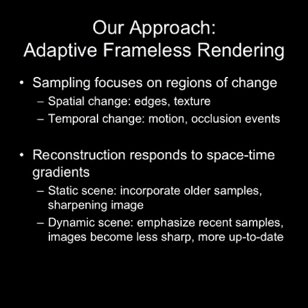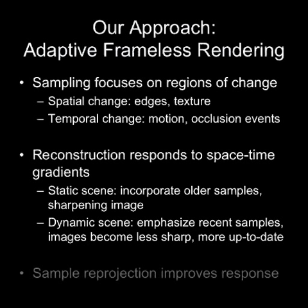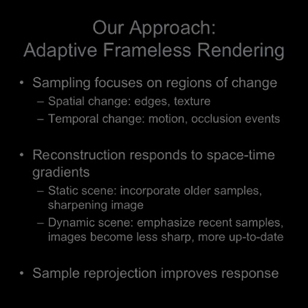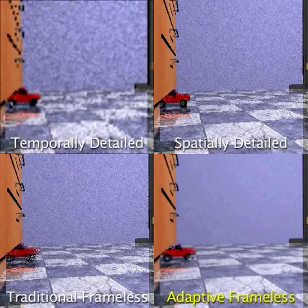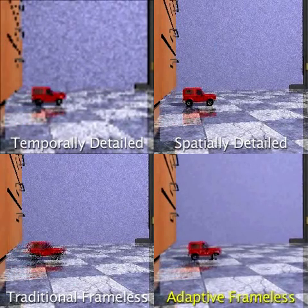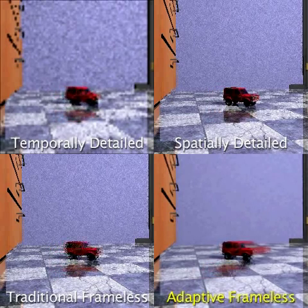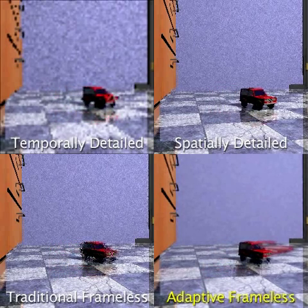In dynamic regions, reconstruction emphasizes more recent samples, resulting in less sharp but up-to-date imagery. Both sampling and reconstruction can incorporate sample reprojection to improve rendering response to camera and object motion. The resulting system greatly improves the visual quality available at a given sampling rate.